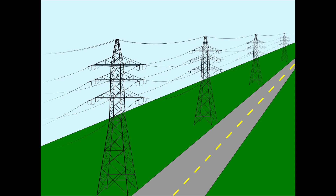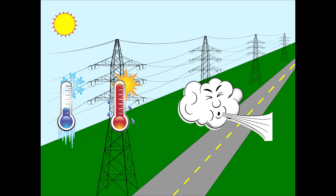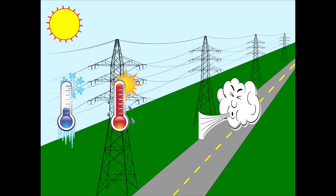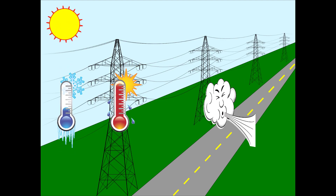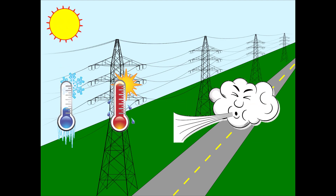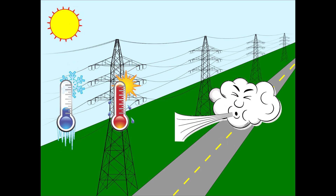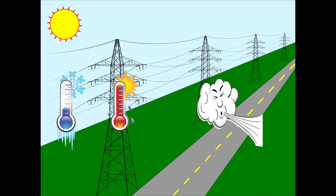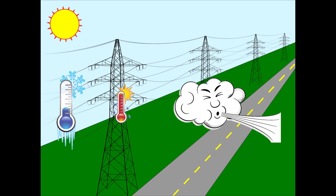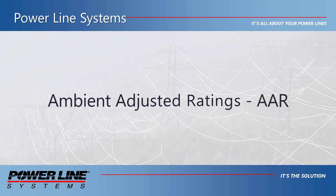FERC Order 881 essentially acknowledges that line ratings can change depending on external conditions influencing the line, and that line ratings are not a simple constant value under all circumstances. As ambient conditions such as air temperature, wind speed and direction, and solar intensity change, it can impact the temperature of conductors, which influences the amount of electrical current a conductor can safely transmit before a clearance violation occurs. Adjusting ratings to account for these outside influences is referred to as ambient adjusted ratings, or AAR for short.